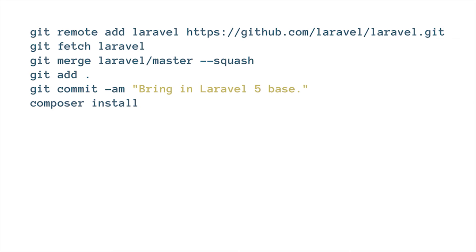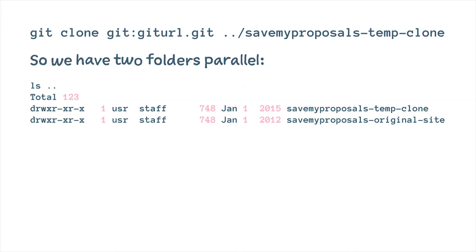There are a couple of ways to do that, but the easiest is to add Laravel's remote, fetch it in, merge the master branch, squash it, and you've got a commit that looks like an entirely fresh Laravel 5 install. Then in a parallel directory somewhere else, bring in your original site as a clone that we're going to be copying stuff from. You basically have two versions of it: one with the new branch and one with the old site.